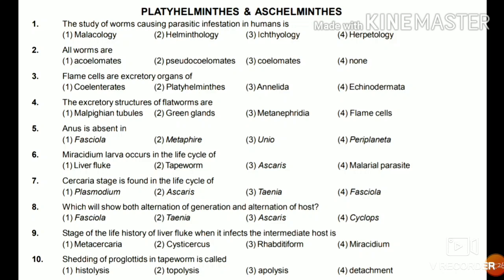Question 7: Cercaria stage is found in the life cycle of Plasmodium, Ascaris, Taenia, or Fasciola? Cercaria stage is found in the life cycle of Fasciola. Question 8: Which will show both alternation of generation and alternation of host — Fasciola, Taenia, Ascaris, or Cyclops?